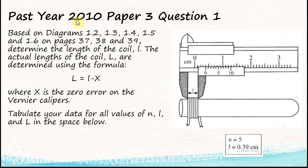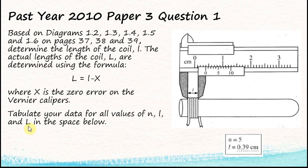This is a past year 2010 Paper 3 Question 1. The question says: based on the diagrams, determine the length of the coil L using the formula L = l − x, where x is the zero error on the vernier calipers. Tabulate your data for all values of n, l, and capital L in the space below. So we need three columns: n, small l, and capital L.